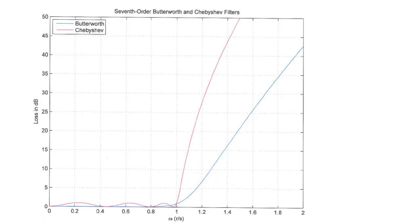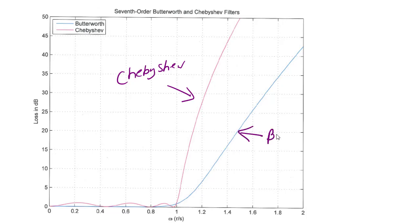Here we have a plot of the loss in decibels for 7th order Butterworth and Chebyshev filters. The main thing to notice is that one has ripple in the passband and a steeper transition period — that one is the Chebyshev filter. The Butterworth filter is maximally flat in the passband, but the transition is slower.